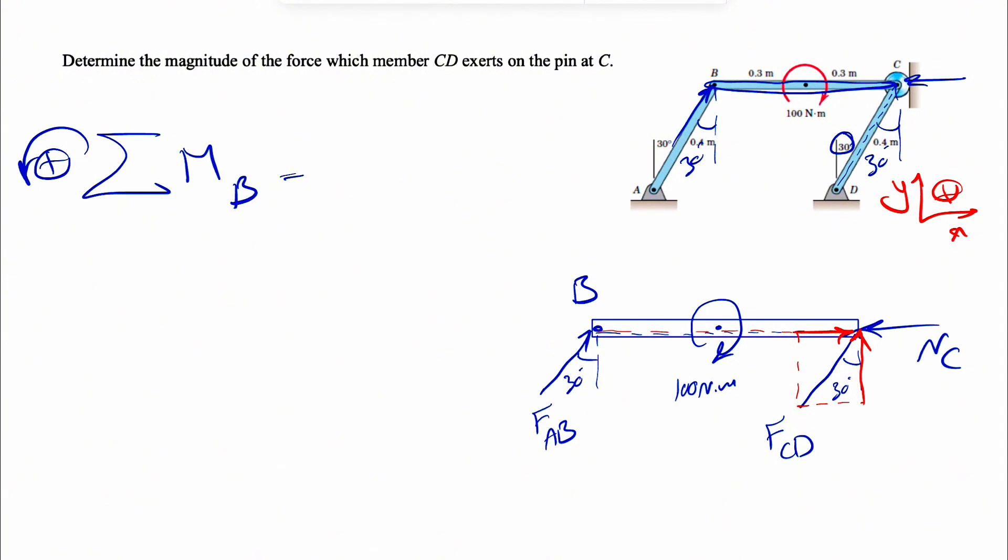We only have the moment of the Y component, which is FCD cosine of 30, and the moment would be in this direction, so counterclockwise positive. Plus FCD cosine of 30 degrees, and the distance would be the distance from B to C, which is 0.3 plus 0.3, which is 0.6.